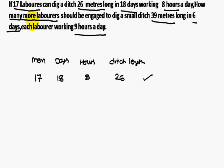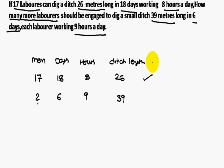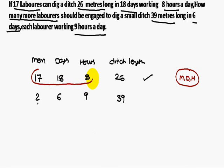Second statement: the question mark is the number of men required. The ditch is 39 meters long, completed in 6 days working 9 hours a day. Remember: men, days, and hours should always be together — so 17, 18, 8 go together for statement one, and 6 and 9 go together for statement two.